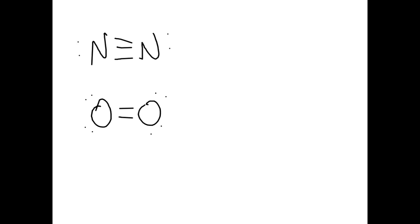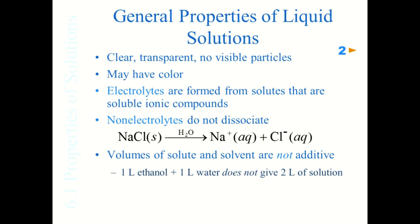We're going to focus on liquid solutions for the most part. Properties of liquid solutions: they're clear and transparent. You cannot see the particles — if everything is dissolved, you can't see them. If you see particles, they have come out of solution. We call that a precipitant — those are no longer part of the solution once they come out.